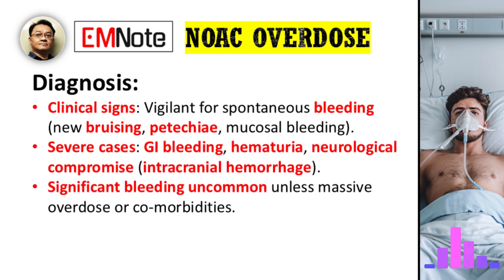From a clinical perspective, early signs are often absent. You need to be vigilant for signs of spontaneous bleeding, such as new bruising, petechiae, or mucosal bleeding from the gums or nose. In severe cases, we might see significant gastrointestinal bleeding, hematuria, or most critically, signs of neurological compromise suggesting an intracranial hemorrhage. Remember, significant bleeding is uncommon unless there's a massive overdose or pre-existing comorbidities.